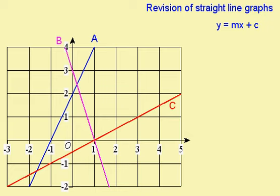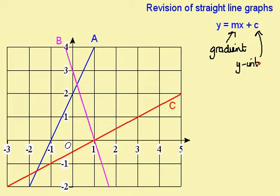A quick revision of straight line graphs: all straight line graphs have an equation of the form y equals mx plus c. m is the gradient and c is the y-intercept, that is, where the line passes through the y-axis.